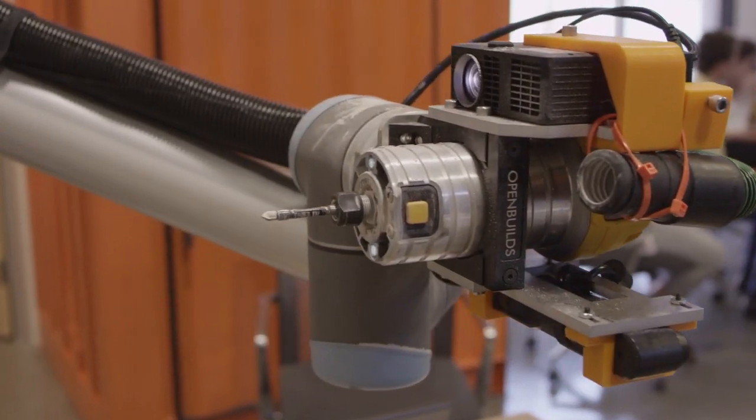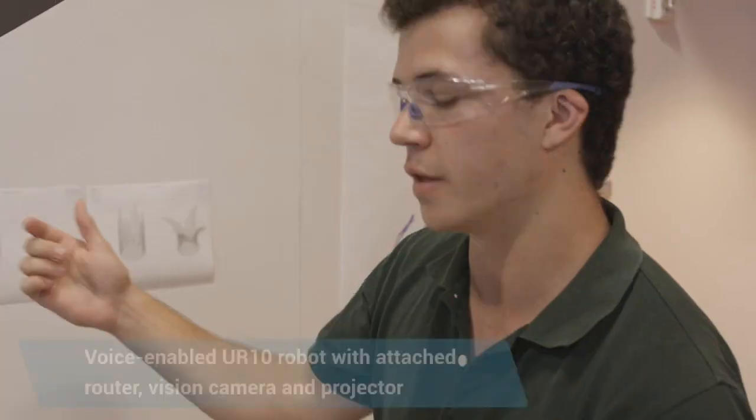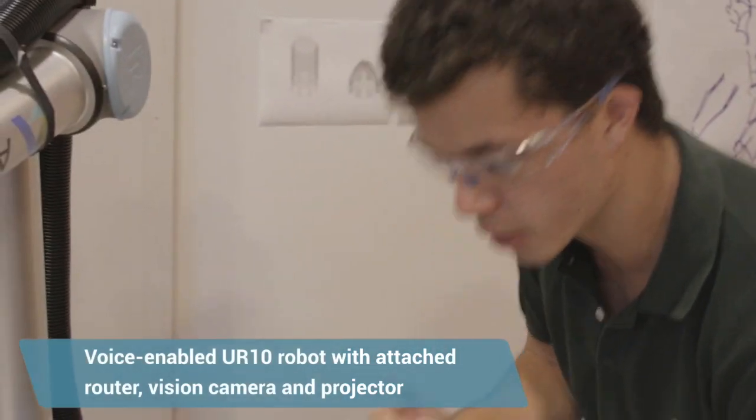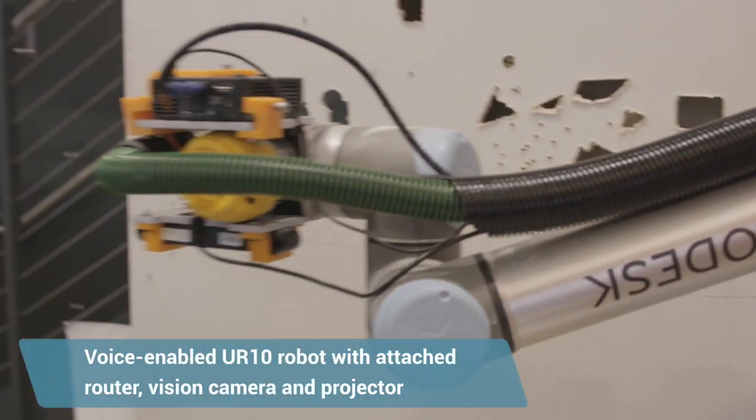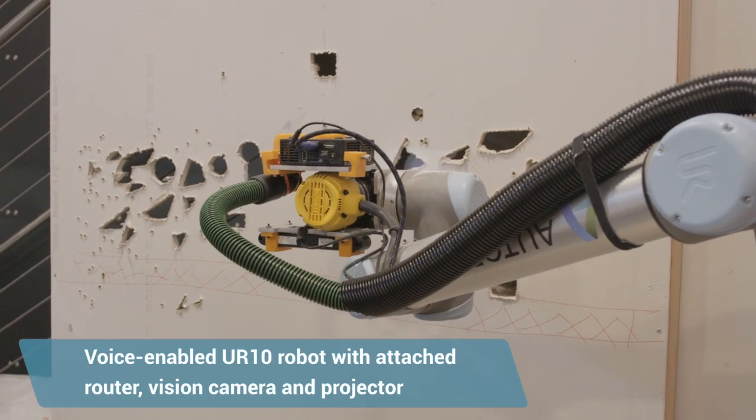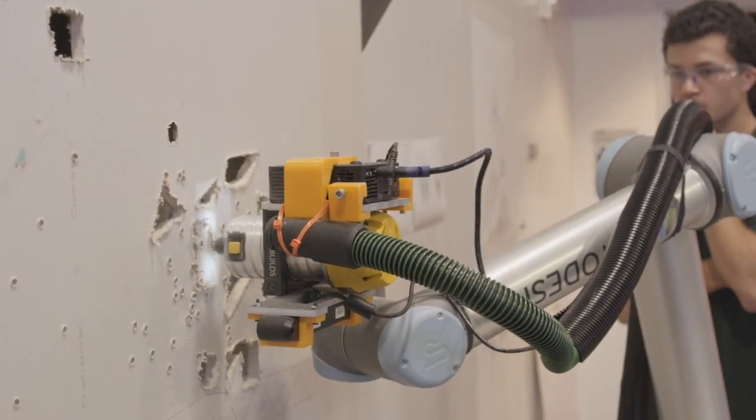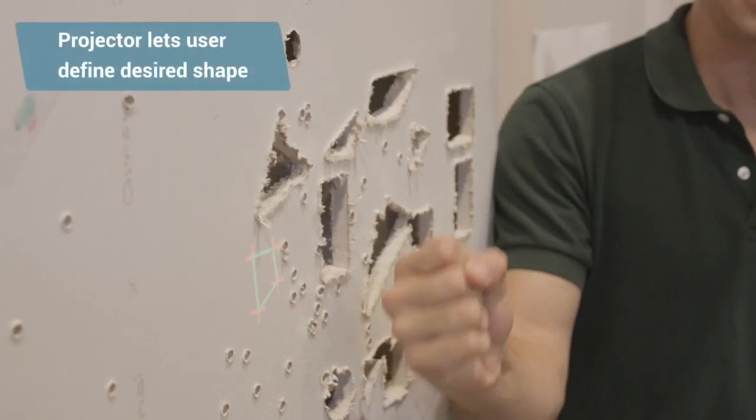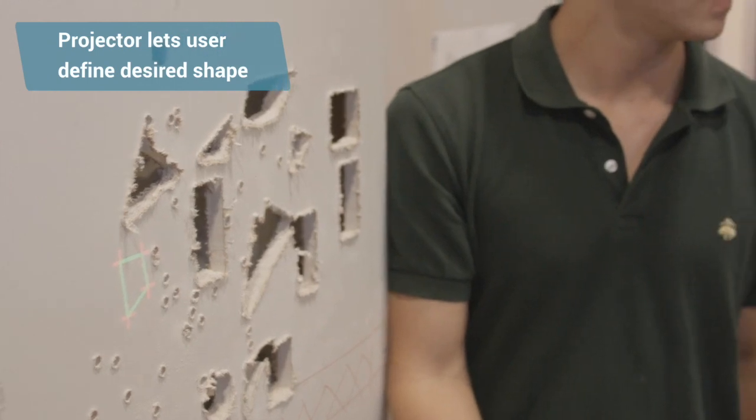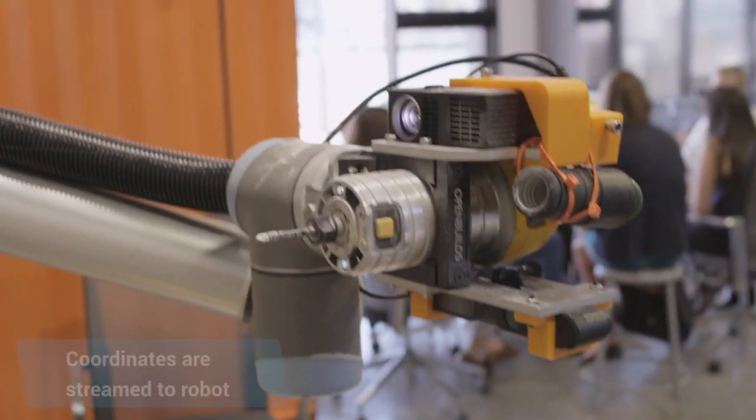One of the things we've often thought about is robots on the construction site, and for a big industrial robot, it's not super feasible. But we started a demo project where we put a router on the end of the robot, gave it a camera and a projector, and you could just push it up to a piece of drywall and say cut an outlet there. You'd be able to point, it would see where you point, it would project the outlet so you could confirm.